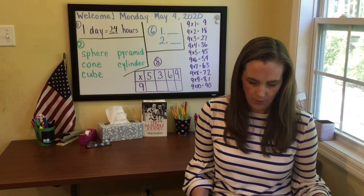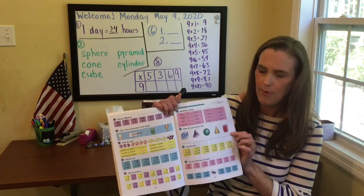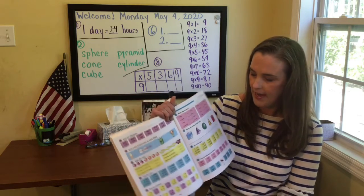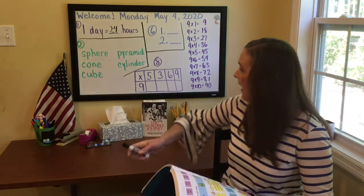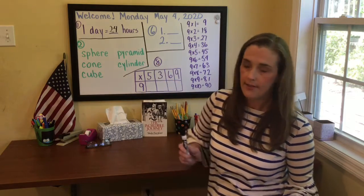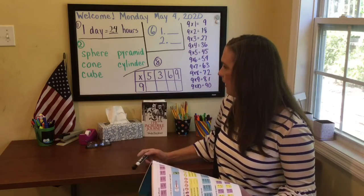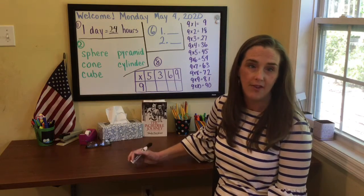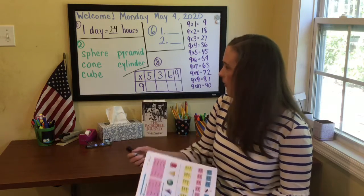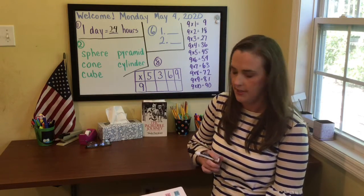Part two has different solid shapes and you are to label them with the correct name — you're supposed to write the name of each shape. I have them up here on the board, and if you want to pause the video for a minute and write the names under those shapes while the words are up there spelled correctly, you can do that.